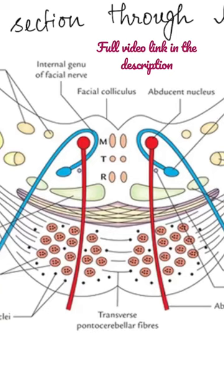The transverse fibers arise in the pontine nuclei and cross to the opposite side to form the middle cerebellar peduncle. These are pontocerebellar fibers.